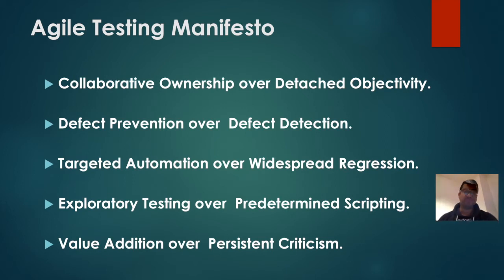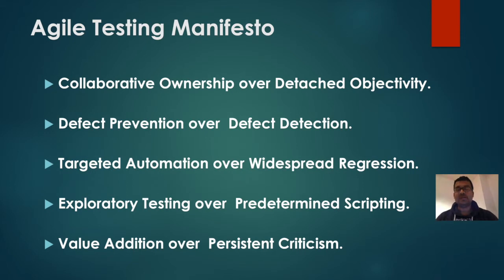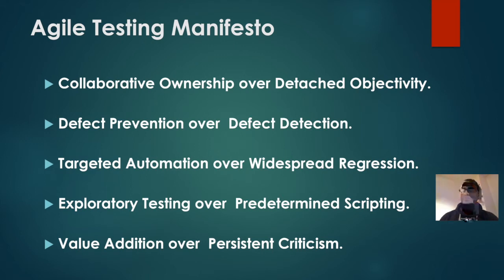The fifth manifesto point is value addition over persistent criticism. Testers have often been considered as criticizers of developers and designers, but in agile methodology testers and quality professionals are considered to provide value. Since everyone — developers, business analysts, designers, and business stakeholders — is responsible for quality, quality professionals add value to the whole quality system.